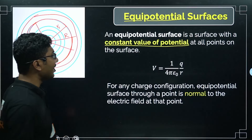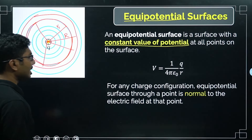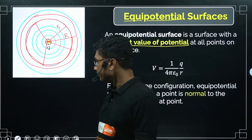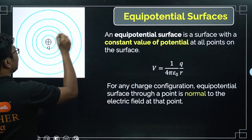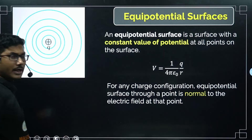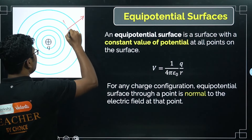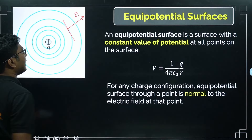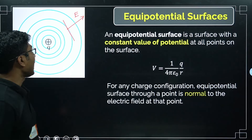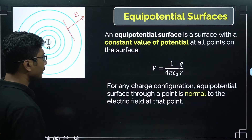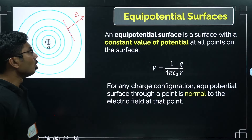For any charge configuration, the equipotential surface through a point is normal to the electric field at that point. The electric field at a given point will be normal to the equipotential surface — equivalently, it is normal to the tangent drawn at that point on the surface.